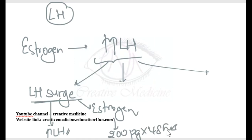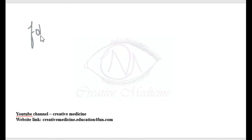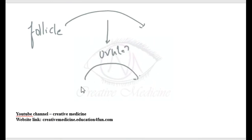After the LH surge, meiosis 1 will resume. This is hormone dependent and results in ovulation — the primary oocyte gives rise to the secondary oocyte. Once ovulation has occurred, the follicle gets converted to the corpus luteum.